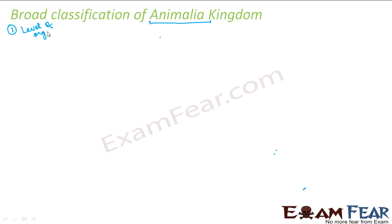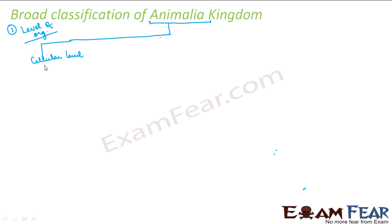This is my Animalia kingdom. Now the first parameter that we discussed was the level of organization. What were the various levels? Cellular level, tissue level, organ level, organ system level. Now if you consider the cellular level — we will see that. The next parameter that we discussed was symmetry.